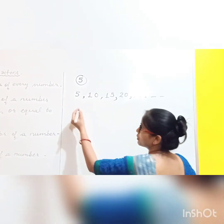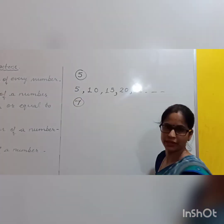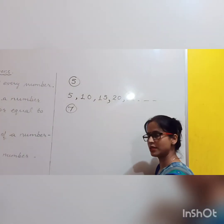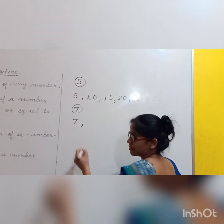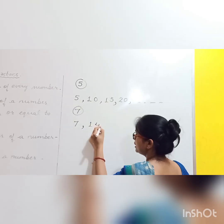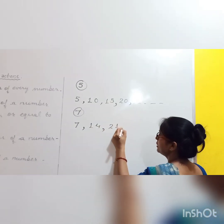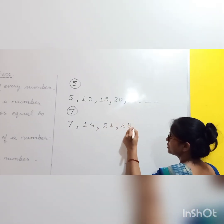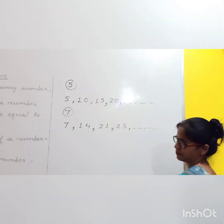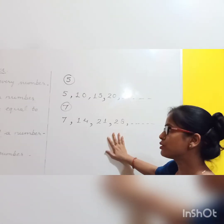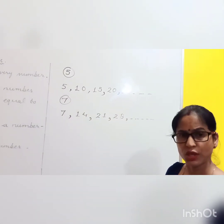Let's take another example: multiples of 7. Again, reading the table — 7 ones are 7, 7 twos are 14, 7 threes are 21, 7 fours are 28, and so on. So all these are the multiples of 7.